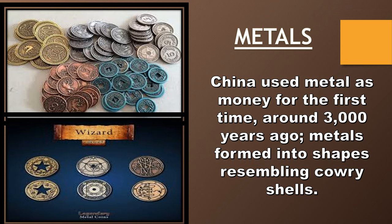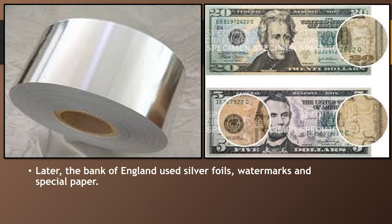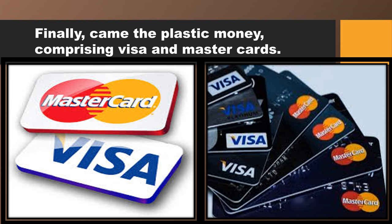Metal was used as money, and China used metal as money for the first time, around 3000 years ago. Metals were formed into shapes resembling cowrie shells. Later, the Bank of England used silver, watermarks — you can see the watermarks here — and special paper for making currency. Finally came plastic money, comprising Visa and Mastercard.